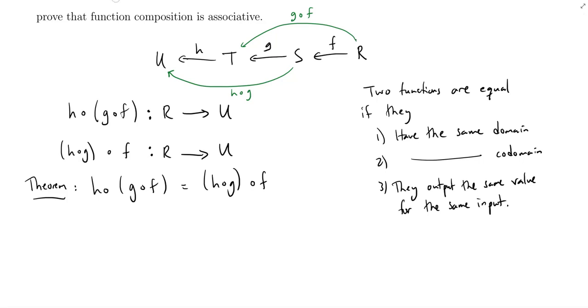Now in this case, we're really solid on number one and number two. They both have domain R and codomain U. So all we got to check now is whether or not when you put in the same value into the functions, we get the same value out of the functions. Okay, so let's give it a try. So the inputs are elements of R. So for our proof, we better start by saying let x be an element of R.